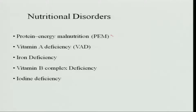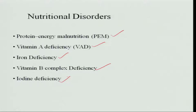The important nutritional disorders are: protein energy malnutrition, vitamin A deficiency, iron deficiency, B complex deficiency, and iodine deficiency. These are the main nutritional disorders that occur because of excess or deficient intake of various nutrients.